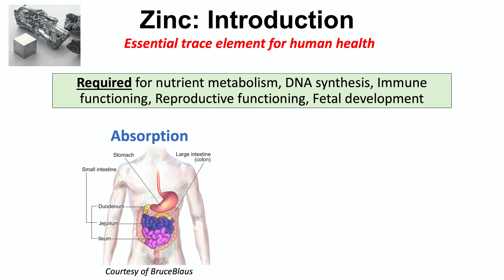When zinc is consumed in our diet, it gets absorbed in the gastrointestinal system — specifically in the first part of the small intestine, the duodenum, and more specifically in the distal duodenum, as well as in the proximal jejunum, which is the second part of the small intestine. This is the area where zinc is absorbed.